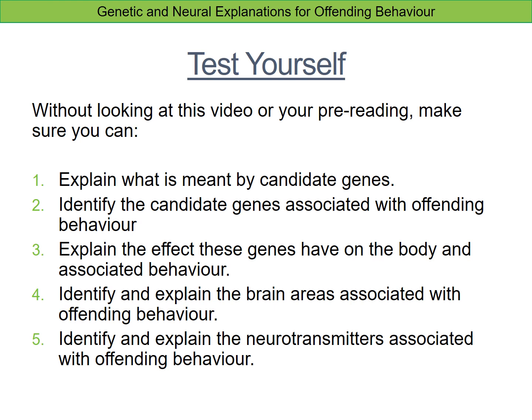You can read more about these explanations in your pre-reading. Before you come into the lesson, make sure you can: explain what we mean by candidate genes; identify the two candidate genes associated with offending behavior and explain the effects these genes have on the body and associated behavior; identify and explain the brain areas associated with offending behavior; and identify and explain the neurotransmitters associated with offending behavior.